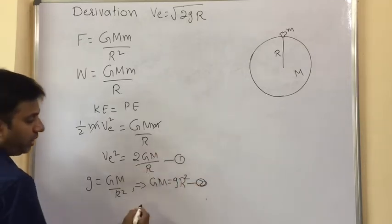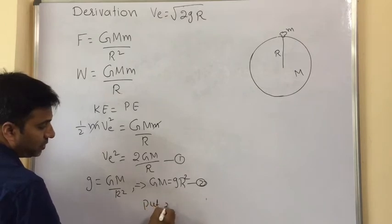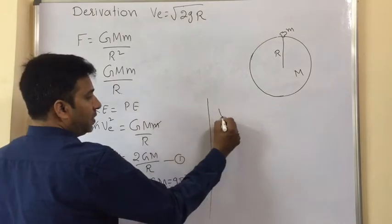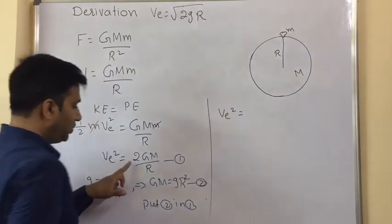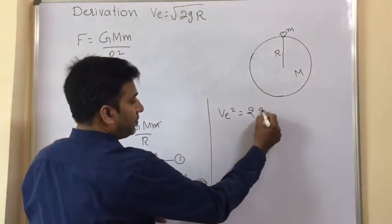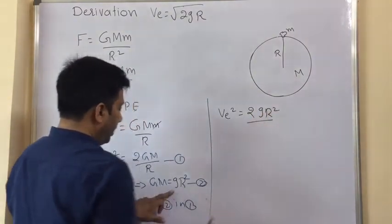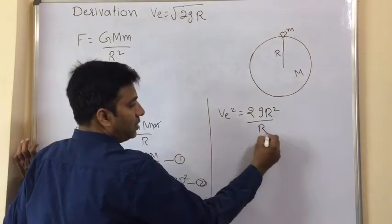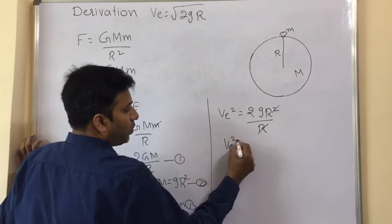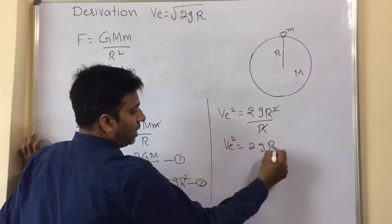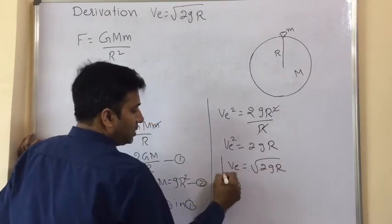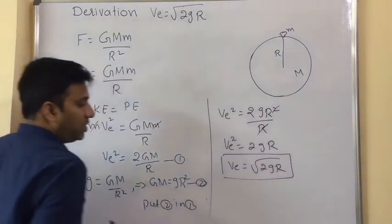Now put equation 2 in equation 1. So v_e square equal to 2, in place of GM write gR square by R. Here, R square and this R get cancelled. v_e square equal to 2gR. v_e equal to under root 2gR. So this is the expression for escape velocity: v_e is equal to under root 2gR.